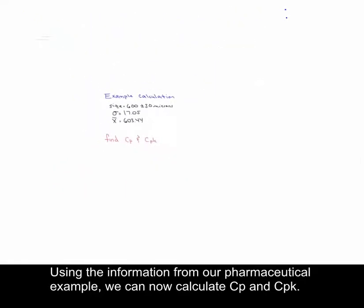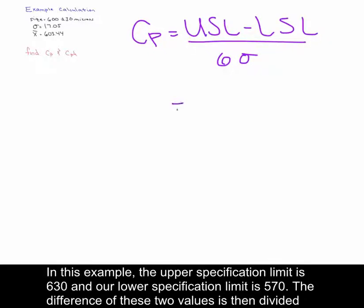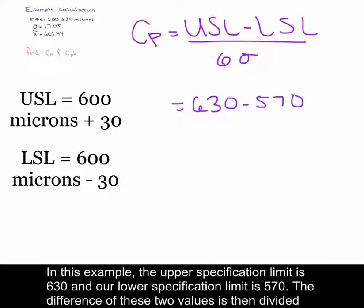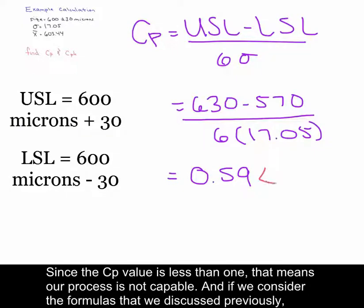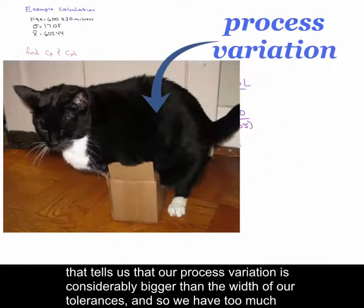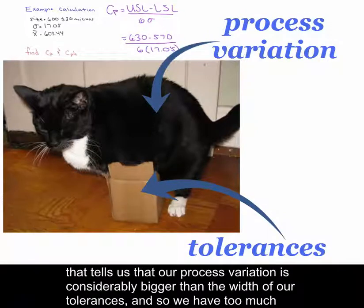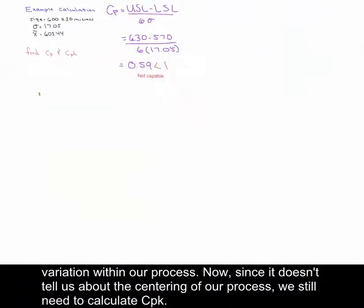For CP, it equals the upper specification limit minus the lower specification limit divided by six times the standard deviation. In this example, the upper specification limit is 630 and the lower specification limit is 570. The difference of 60 is divided by 6 times the standard deviation of 17.05, giving us a CP value of 0.59. Since CP is less than 1, our process is not capable — our process variation is considerably bigger than the width of our tolerances. We still need to calculate CPK because CP doesn't tell us about the centering of our process.